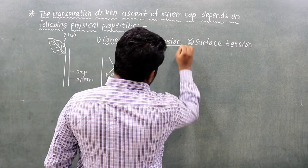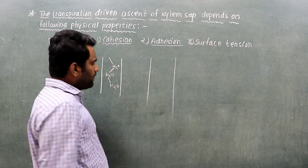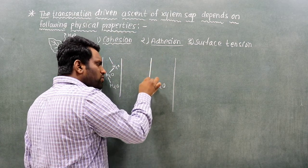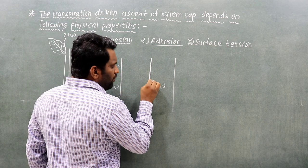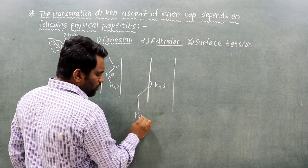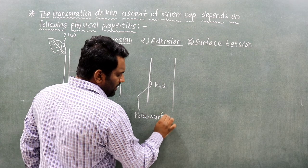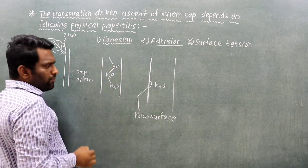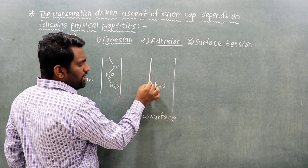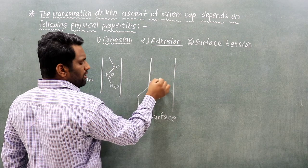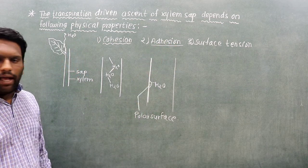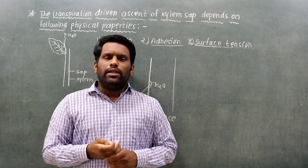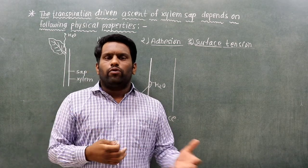The second property is adhesion. Water molecules are attracted to polar surfaces such as the walls of xylem vessels. The attraction between water molecules and other polar materials is called adhesive force. The third property is surface tension: water molecules at the surface are pulled together, creating tension.